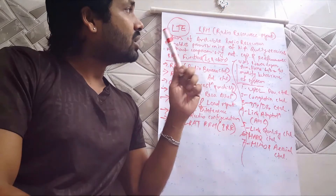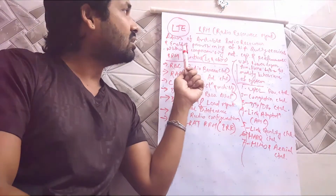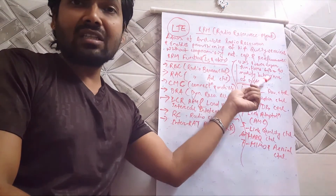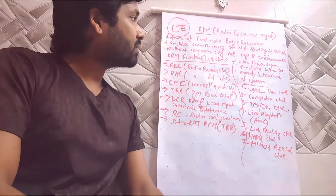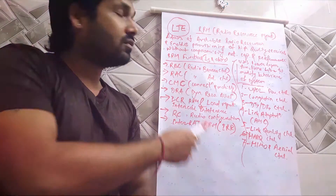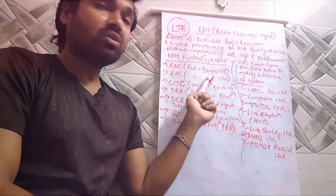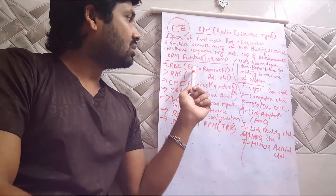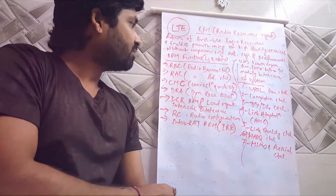The Radio Resource Management is responsible for the administration of the available radio resources and enables the provisioning of high quality services without compromising the network capacity and performance. Now let's move forward to the RRM functions for Layer 3 and above. The first function is Radio Bearer Control, or RBC, which is the most important function of Radio Resource Management in the LTE network — it controls the radio bearers in the eNodeB as well as in the network.